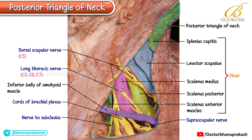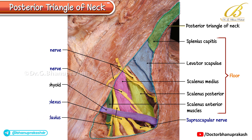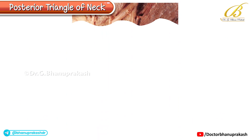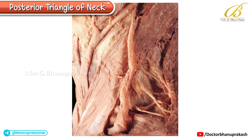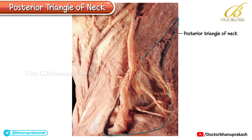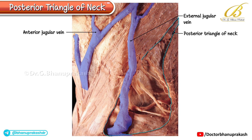Together, these structures clearly illustrate the deep neurovascular and muscular anatomy of the posterior triangle of the neck. The cadaveric image reveals the deep contents of the posterior triangle of the neck and the communication between the external and anterior jugular veins.